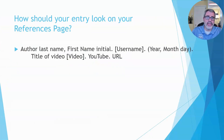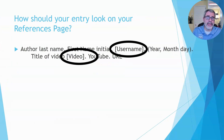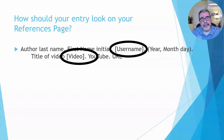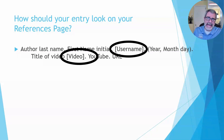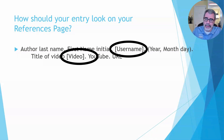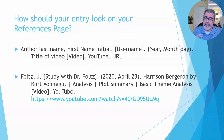Let's look at how the reference entry should look. I want to draw your attention to the two bracketed items. The first bracketed item is the username, and we're going to keep the brackets and put the username in there. The second bracketed item is the word 'video' — we're actually going to keep the word video in the bracket; that's never going to go away.